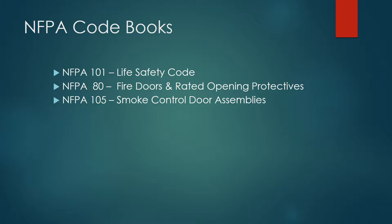The NFPA code books we'll primarily touch on are NFPA 101 Life Safety Code — specifically chapter 8 on doors and openings, and chapters 18 and 19 — and NFPA 80, fire doors and rated openings, which is the heart of understanding the maintenance and requirements of door operation. NFPA 105 covers smoke control door assemblies, which gets into HVAC, heating and cooling, and how air control as it relates to smoke affects doors.